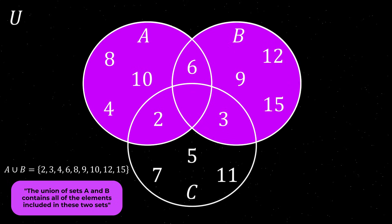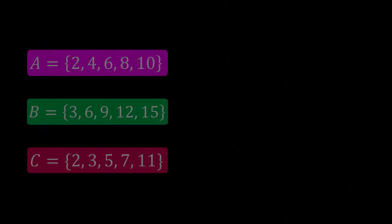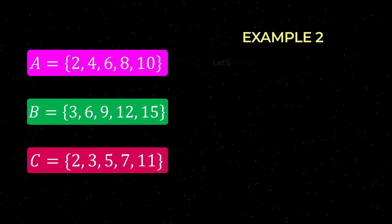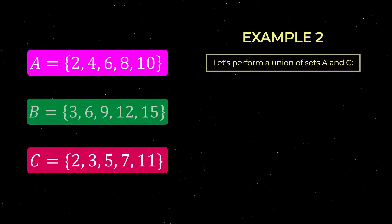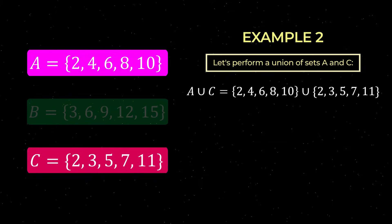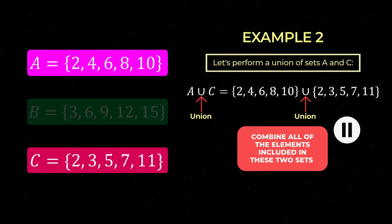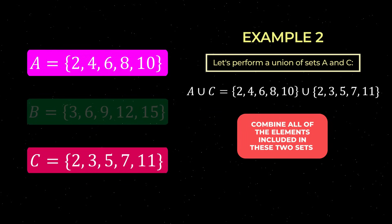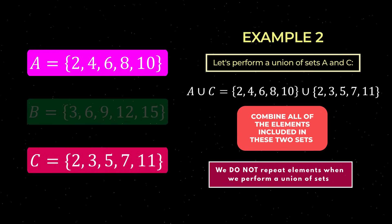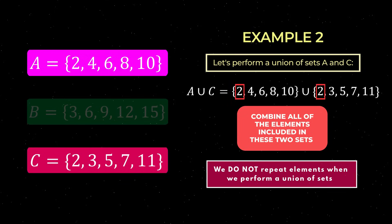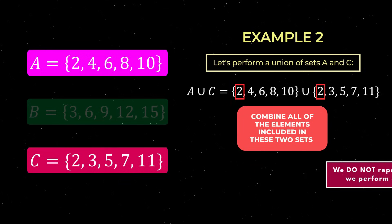Let's return to our sample sets to go through another example. This time, let's perform a union of sets A and C, indicated as follows. As an exercise, pause this video and try to solve this yourself, and when you have done so, press play and I will go through the solution. Combining all of the elements included in these sets and not repeating the element 2, which the sets have in common, we obtain the following.